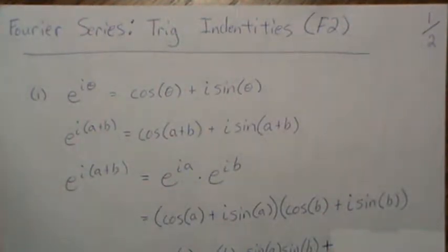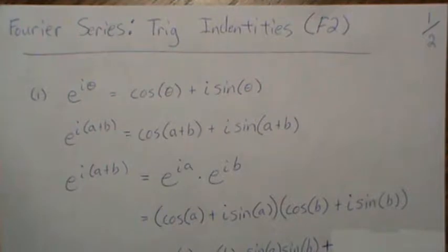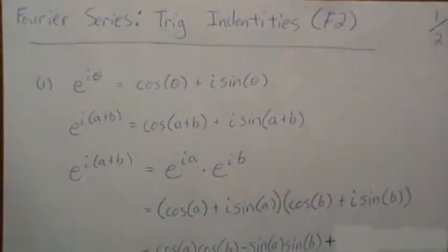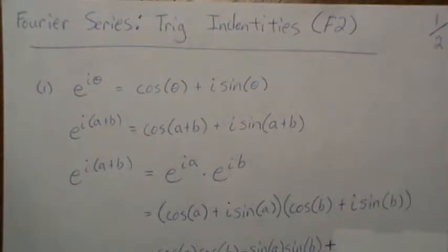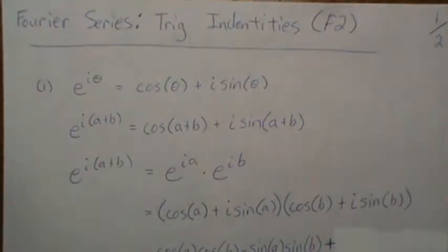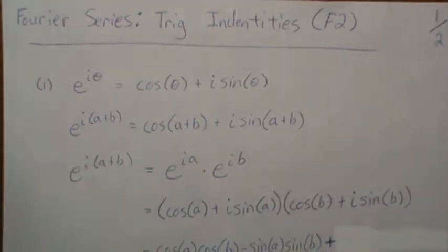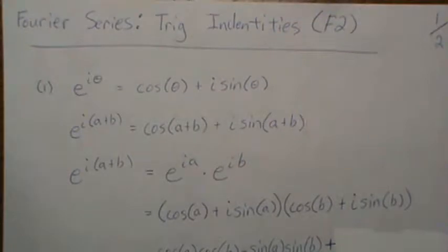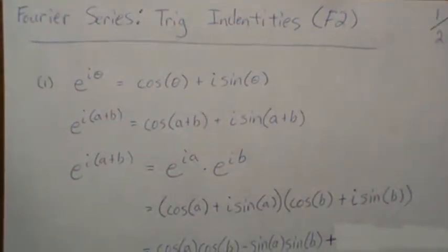Hello, this is the next video in the Fourier series mini-series. I'm going to try to put out 10 to 20 different videos building up the Fourier series and proving a lot of theorems along with it. Here I'm going back to basics. In upcoming videos I always say 'using this trig identity it becomes this,' so I thought I'd list out most of the trig identities I'm going to use in the next several videos.